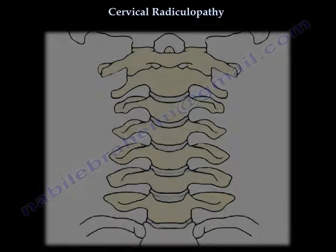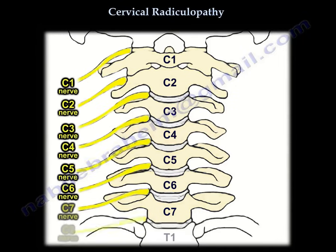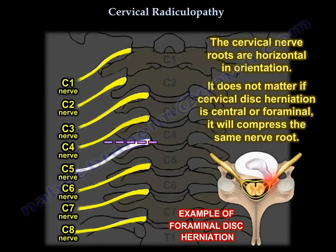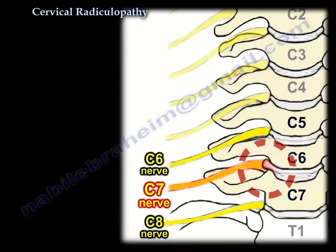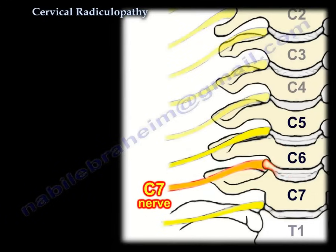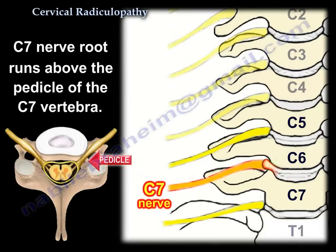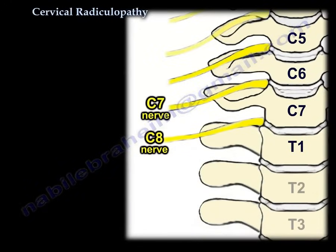Let's understand the arrangement of these nerve roots. You have seven vertebrae but eight nerve roots. The cervical nerve root is horizontal in orientation, so it doesn't matter if the disc is central or foraminal — it will affect the same nerve root. For example, at the C6-C7 level it will affect the C7 nerve root, which runs above the C7 pedicle. C8 runs above the T1 pedicle, and T1 nerve root runs below the T1 pedicle.